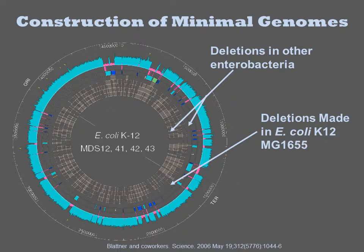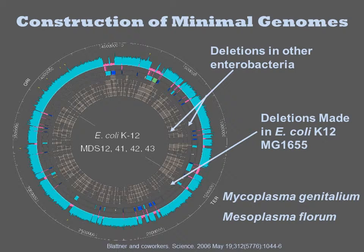Other groups have focused on defining this minimal chassis in a more extreme sense. The mycoplasma are pathogenic bacteria that are so dependent on host cells that most of the metabolism is absent from their genome. As such, their genomes are under a megabase, and the smallest is only 582 KB.